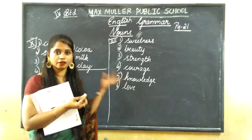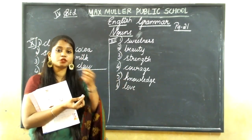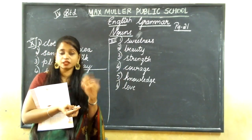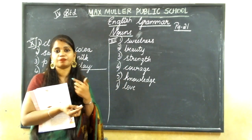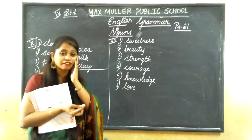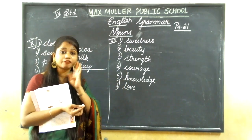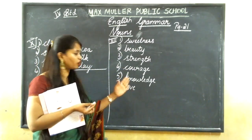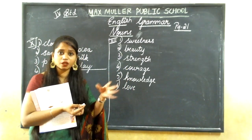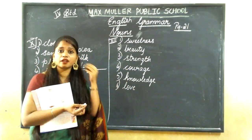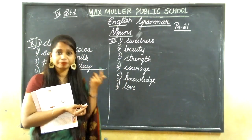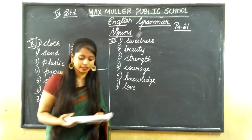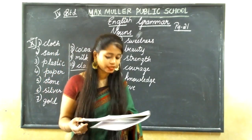These are the abstract nouns — can we see sweetness, beauty, strength? No, we can only feel them. When you put sugar in your mouth you feel the sweetness, but you can't see it. Strength, knowledge — we can think and feel these, but we can't touch them. That is the abstract noun.